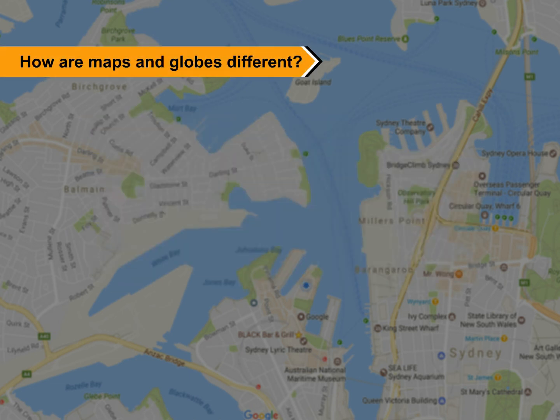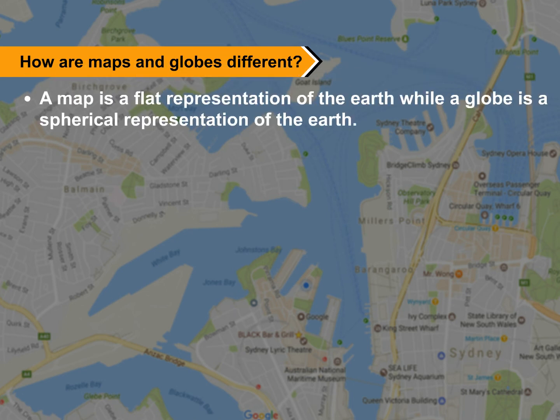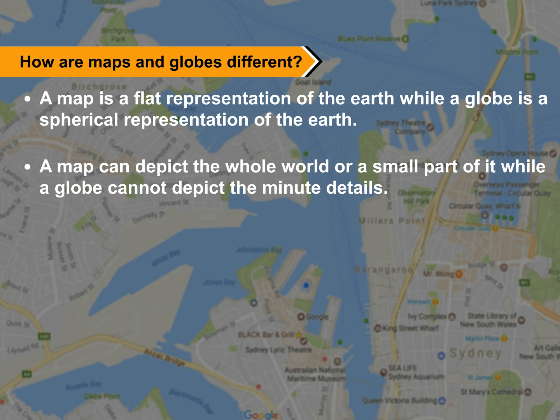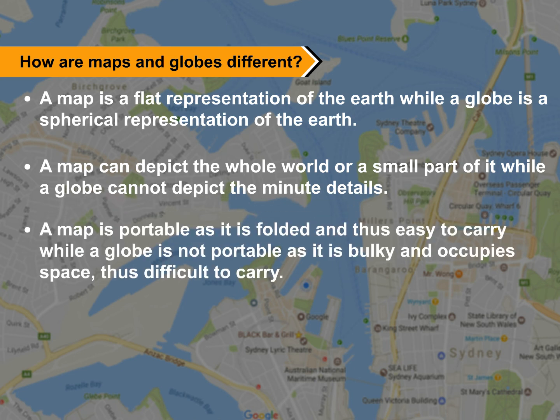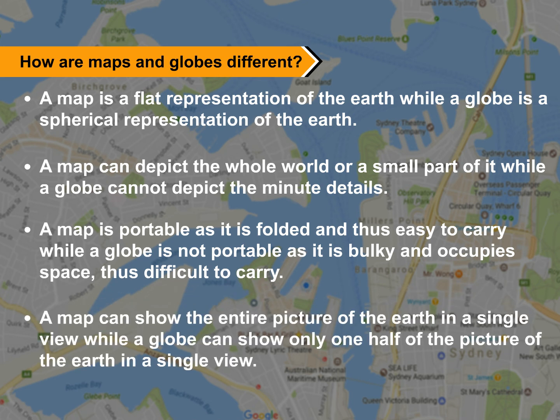How are maps and globes different? A map is a flat representation of the earth, while a globe is a spherical representation. A map can depict the whole world or a small part of it, while a globe cannot depict minor details. A map is portable as it can be folded and is easy to carry, while a globe is not portable as it is bulky and occupies space. A map can show the entire picture of the earth in a single view, while a globe can show only one half of the earth in a single view.